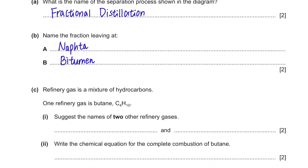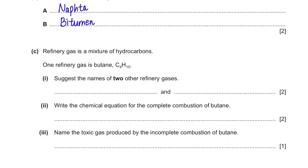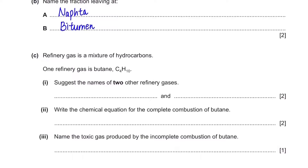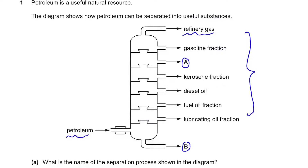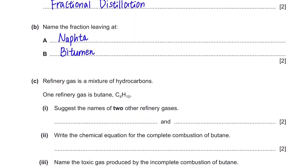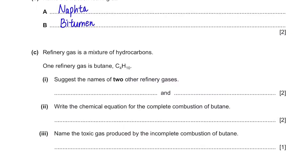Moving on to part C: refinery gas is a mixture of hydrocarbons. One refinery gas is butane, C4H10. Suggest the names of two other refinery gases. The refinery gases are listed here, and one example given is butane. The other two would be methane and ethane. You could also write propane.